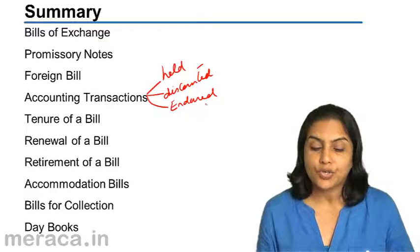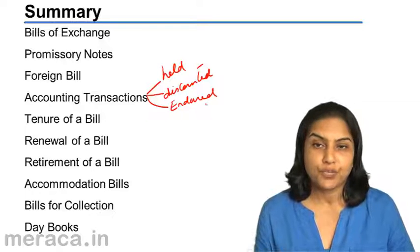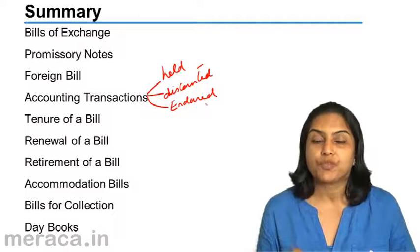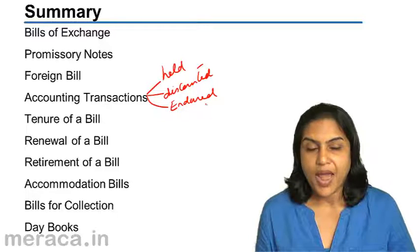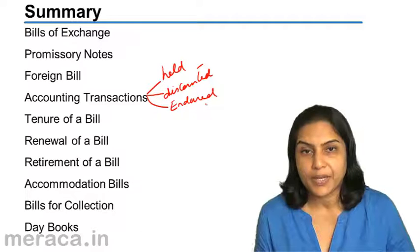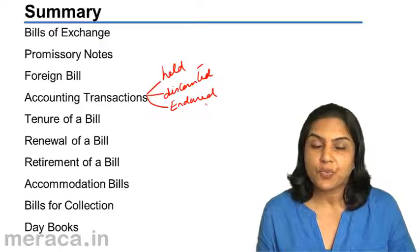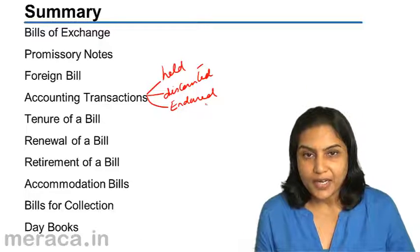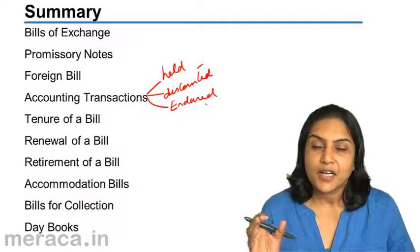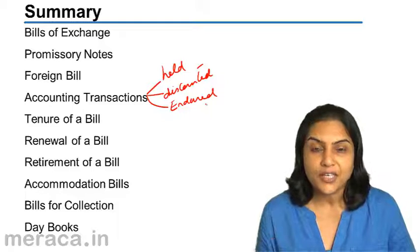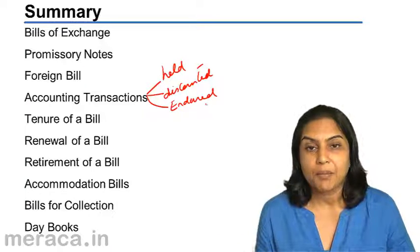We then understood what is renewal of a bill. When a bill has to be renewed, the old bill is cancelled and we pass entries for dishonor, then pass new entries for a new bill. Usually when there is renewal of a bill there is also an interest element — interest for the new period — since the creditor does not get payment immediately and is likely to charge interest for the remaining period.